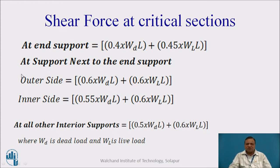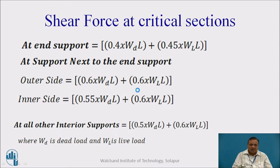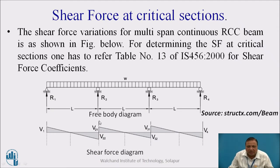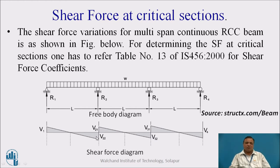The highest value is at the outer side of the support next to the end support. So the shear force is maximum at the outer side — that is 0.6·WD·L + 0.6·WL·L, which equals 0.6 times (WD + WL) into span. On the outer side of both supports next to the end support, you get the highest value of shear force.